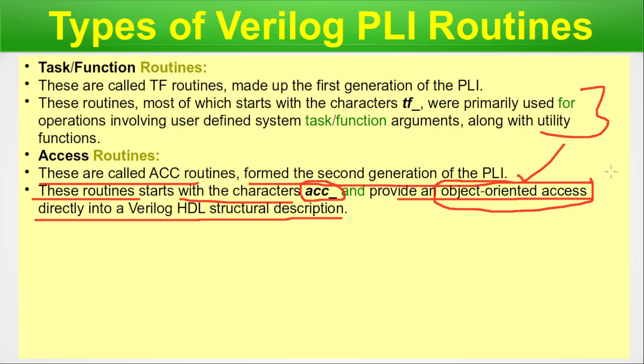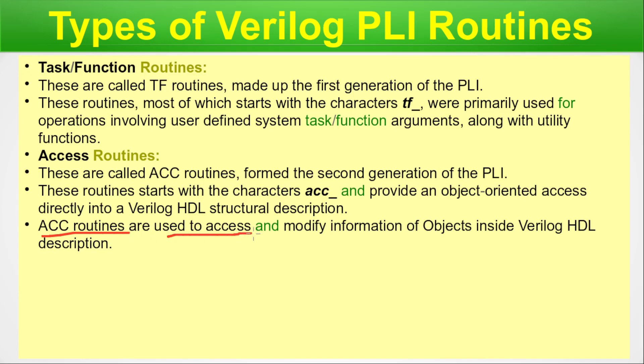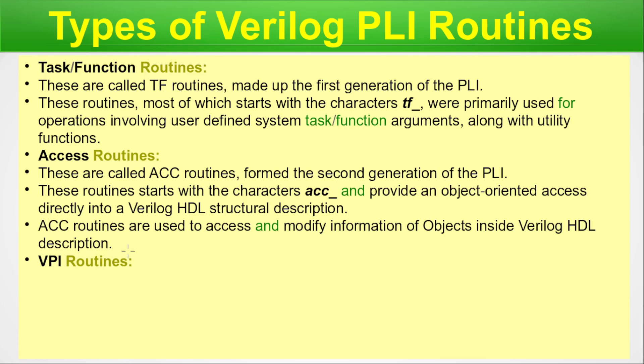There is a striking difference between generations: the first generation is procedural-oriented, while as time passed, object-oriented things became more popular and were incorporated via the ACC routines. ACC routines are used to access and modify information about objects inside the Verilog HDL description — the compiled data structure. The need of the hour was object orientation, as seen in languages like Java and C++, and that has been implemented through the access routines.